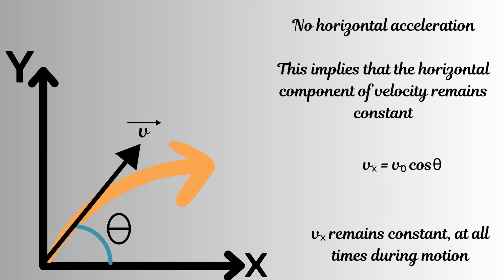In both situations described above — the blowgun and the balls rolled on a smooth table — there is no horizontal acceleration once the objects are released. This means that the horizontal velocity remains the same after the projectile has been released. That is, the horizontal component of the projectile's velocity at any time t remains the same as the initial horizontal component, which is v₀ times cosine of theta.